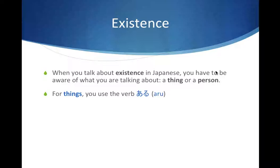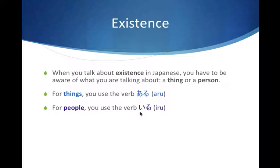For things, you're going to use the verb Aru. When conjugated, it becomes Arimasu. For people, you're going to use the verb Iru. When conjugated, it becomes Imasu.